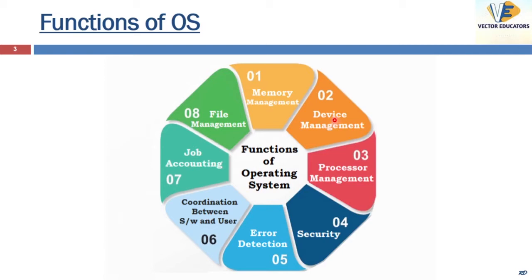This is device management. Now we come to processor management. In a multiprogramming environment, the operating system decides which process the processor will execute and for how long. This function is also called process scheduling. A process is a program in execution — it is an active entity. The OS component that allocates and de-allocates the CPU to processes is called the traffic controller.